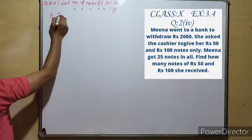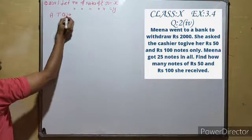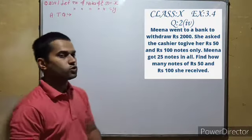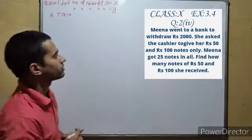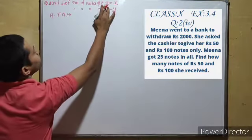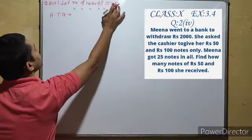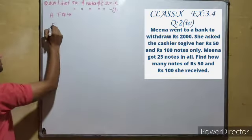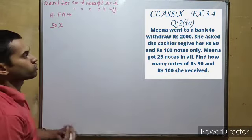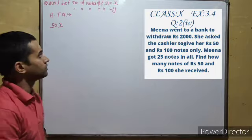The question states that the total rupees withdrawn is 2000. So 50, which is the value of our rupees, we multiply by the number of notes x. So 50x gives the total value of 50 rupee notes.